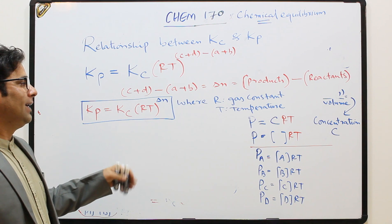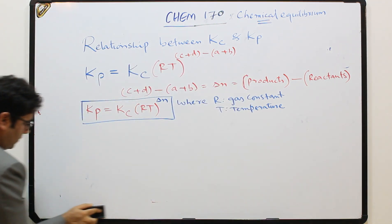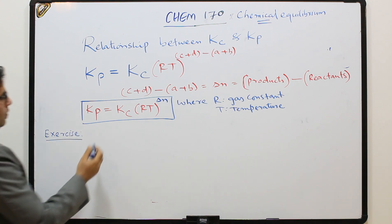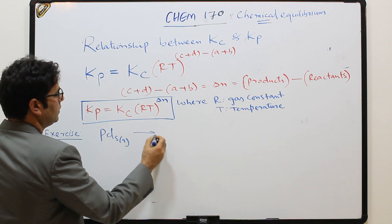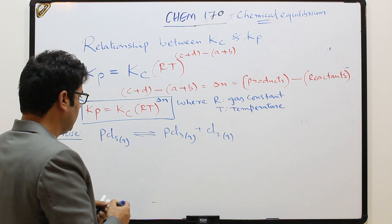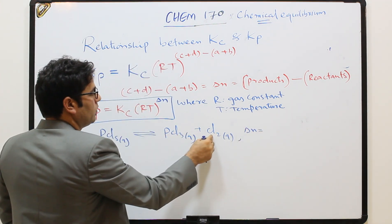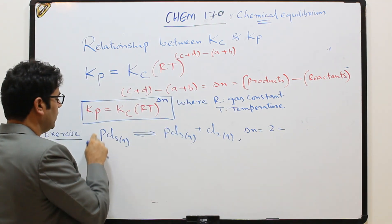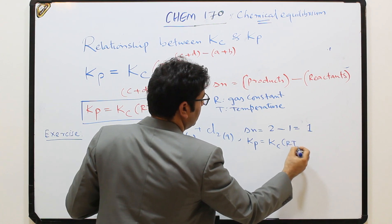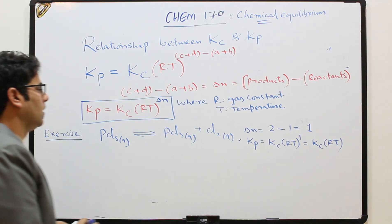Let me apply this equation to examples. Suppose we have: PCl5(g) ⇌ PCl3(g) + Cl2(g). What is the relation between Kp and Kc? First, calculate ΔN: products = 1 + 1 = 2, reactants = 1, so ΔN = 1. Therefore Kp = Kc · RT to the power 1, meaning Kp = Kc · RT.